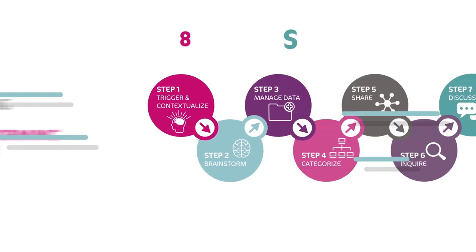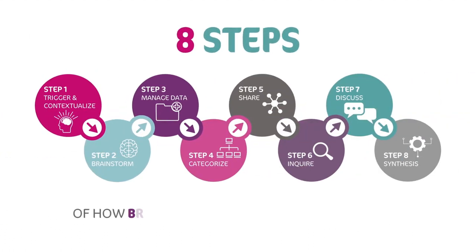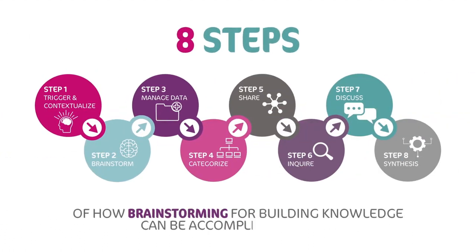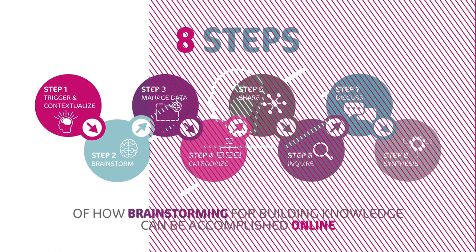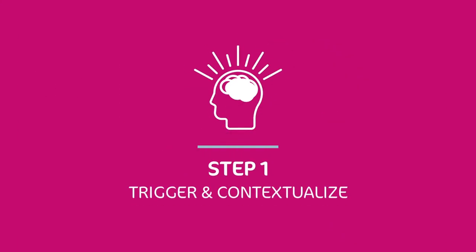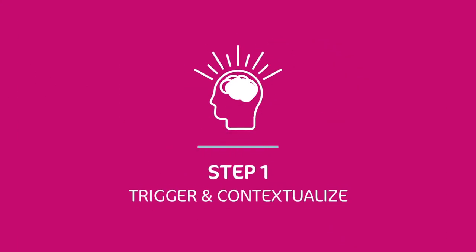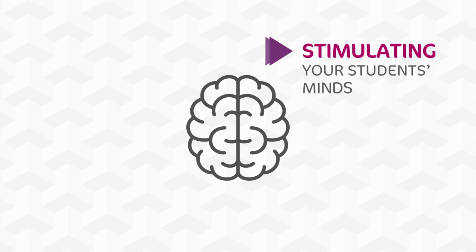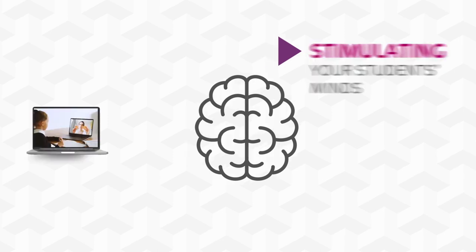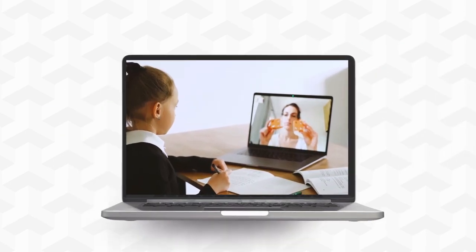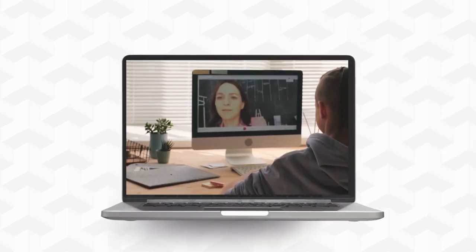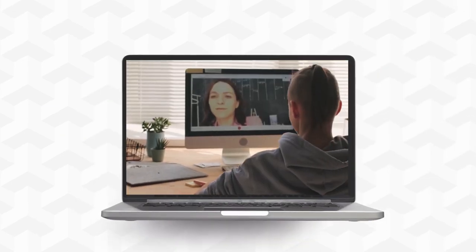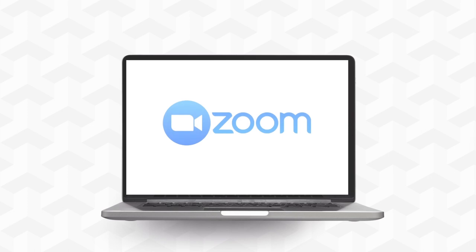Here are the eight steps of how brainstorming for building knowledge can be accomplished online that I'd love to share with you. Step one: Trigger and contextualize. First, kick off by stimulating your students' minds with contextualized visual support documents that relate to the topic you're discussing.